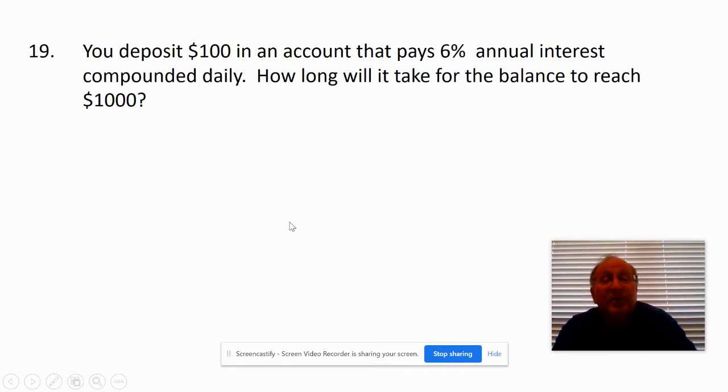Okay, you deposit $100 in an account that pays 6% annual interest compounded daily. How long will it take for the balance to reach $1,000? Well, first off we use a formula. The formula is: the amount you want to have, A, equals the principal you start with, P, times 1 plus the rate divided by n.